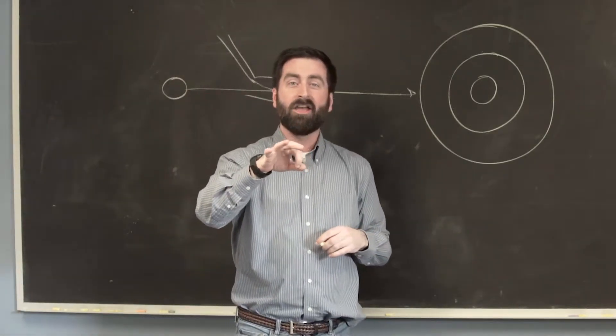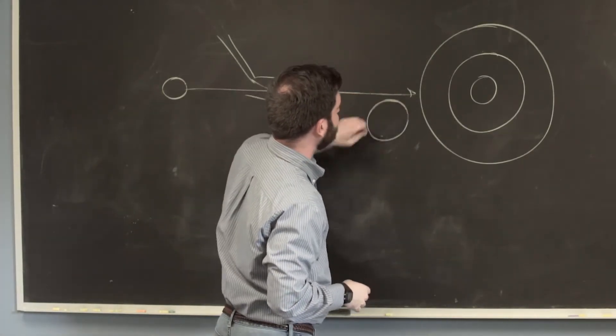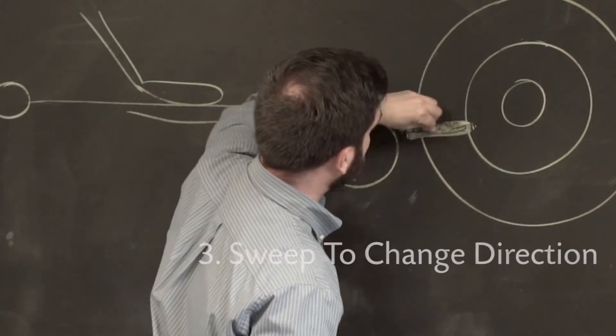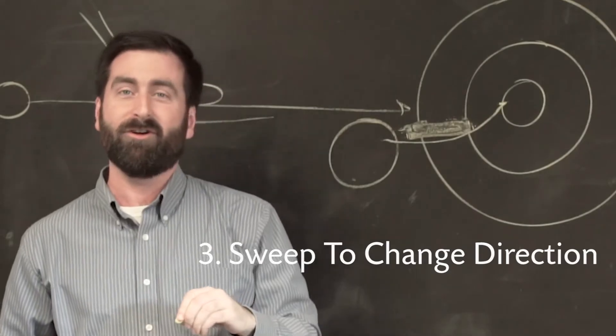Third thing you need to know: you can actually change the direction of the stone by sweeping strategically. For instance, if you only sweep on the left-hand side of the stone that's trying to go around, the stone can actually curve and move exactly where you want it to go.